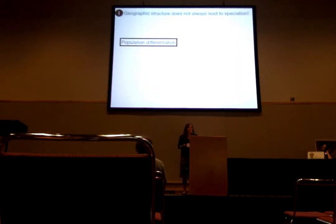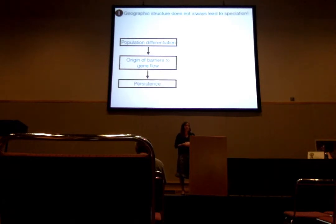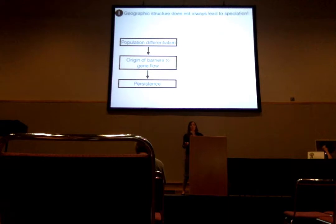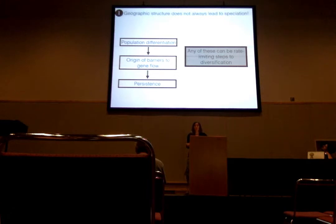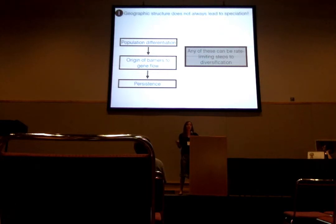This speaks to the point that speciation begins with population differentiation, but it also involves the origin of barriers to gene flow so populations don't completely intermix when they come into secondary contact. It also involves the persistence of species through time, which may relate to whether there is gene flow, and also to things like ecological coexistence. Any of these can be rate-limiting steps in diversification, not just population differentiation. Assuming that populations are species is fundamentally problematic if we want to understand actual processes of diversification and how diversity builds through time.